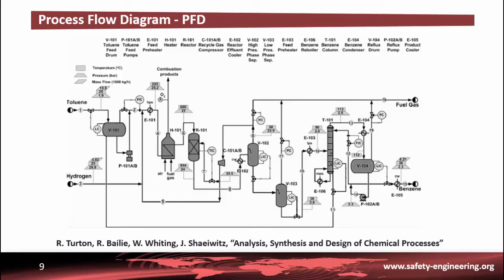The direction of that stream is identified by one or more arrows. The process stream numbers are used to identify streams on the PFD. Also identified are utility streams. Utilities are required services that are available at the plant. Chemical plants are provided with a range of central utilities that include electricity, compressed air, cooling water, refrigerated water, steam, condensate return, inert gas for blanketing, chemical storage, waste water treatment, and flares.